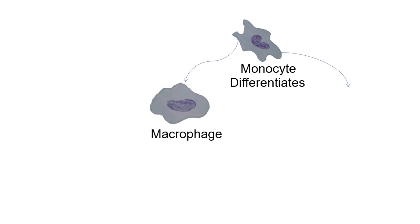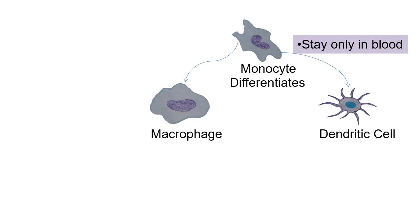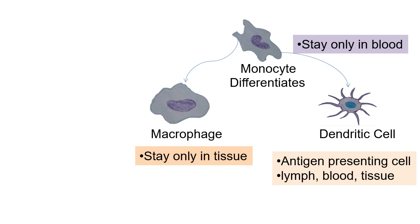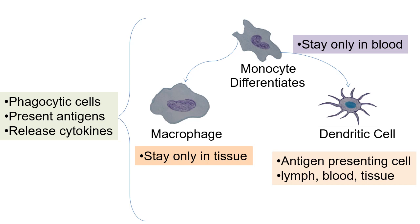Next comes the monocyte. The monocyte differentiates into macrophage and dendritic cell. The monocyte can stay only in the blood, the macrophage can stay only in the tissue, and the dendritic cell can stay in the lymph, blood, and tissue. All three are known as phagocytic cells and antigen-presenting cells, and can release cytokines. The most prominent antigen-presenting cell is the dendritic cell.